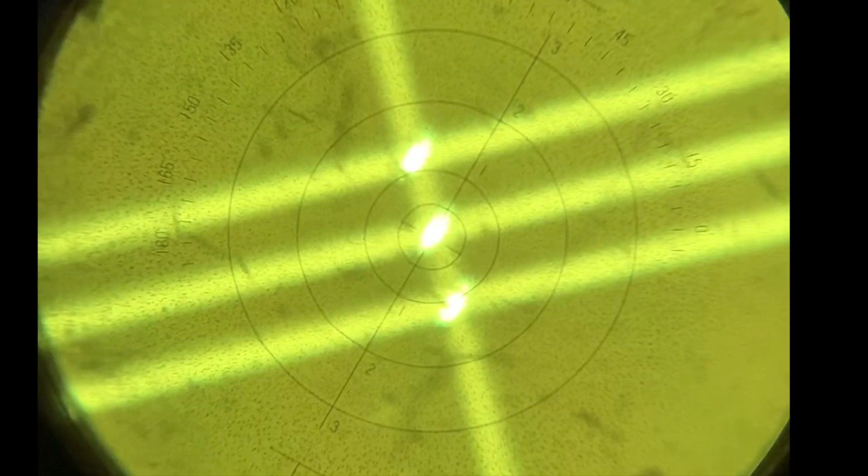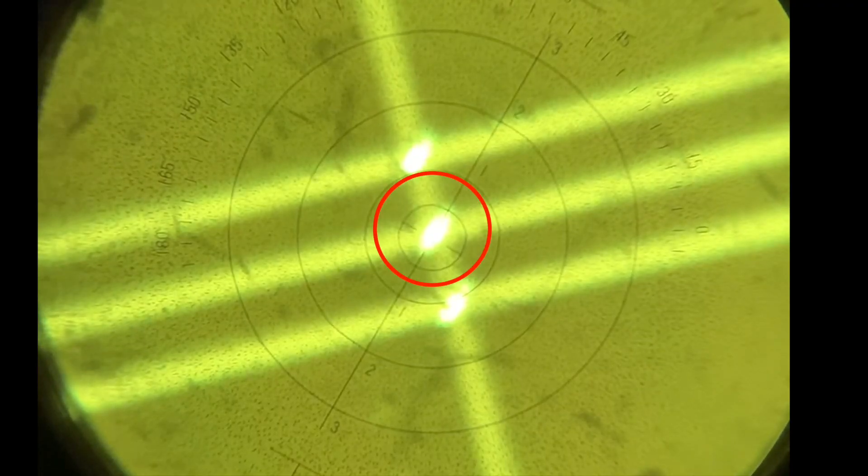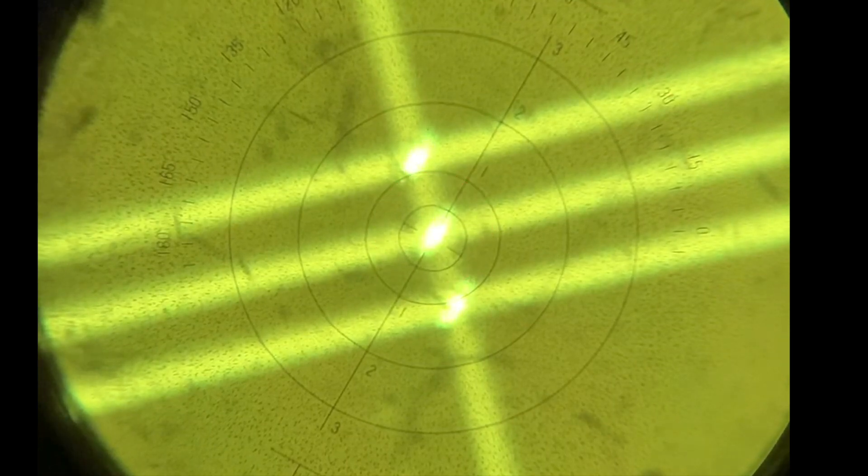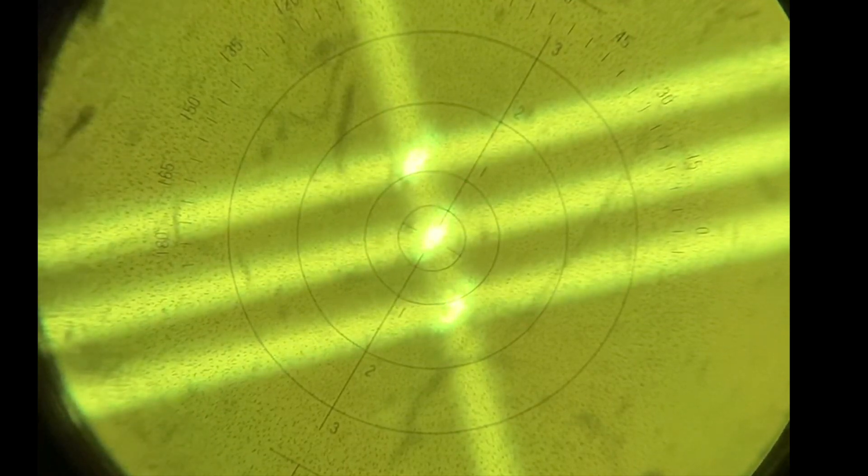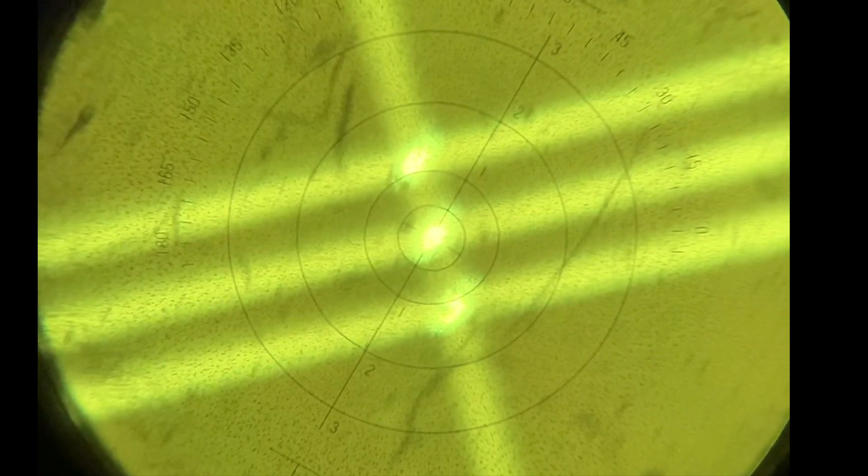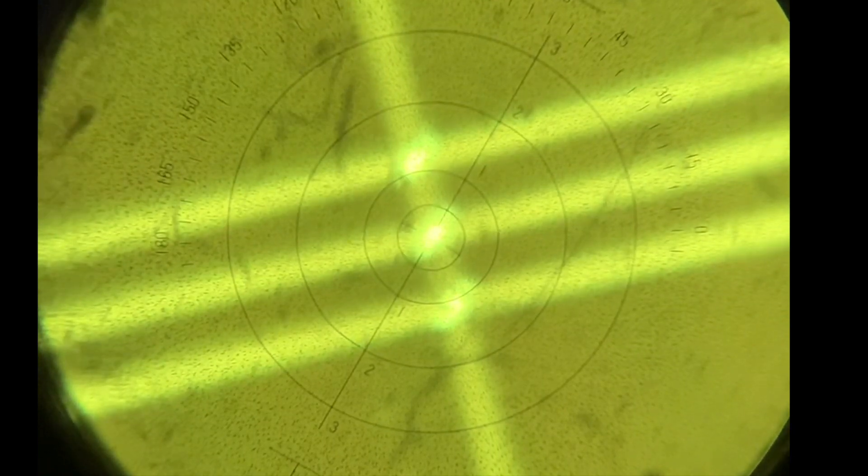Next, we'll look at a sphero cylinder lens. Notice lines appear broken. We need to adjust our axis wheel to find the correct axis for our power meridians.